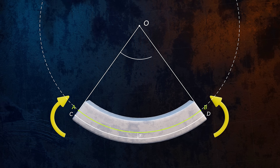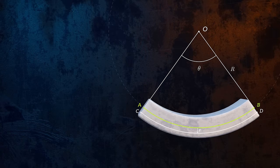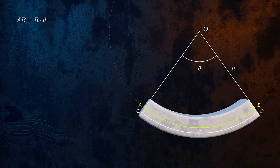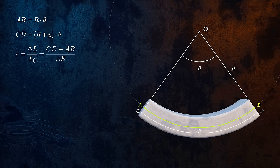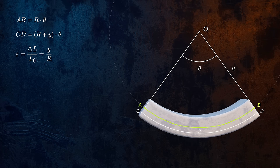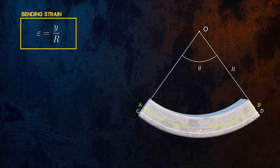If theta is the angle of the arc, and R is the radius of the arc to the neutral axis, we can calculate the length of the arc between A and B, and we can calculate the length of the arc between C and D in the same way. Strain is defined as the change in length divided by the original length, and so we can derive an equation for bending strain at any distance Y from the neutral axis. We define the distance Y as being positive downwards, and so this equation will give us a positive strain for the bottom of the cross section, which is in tension. Sometimes you'll see this equation written with a minus sign, but that's because Y was defined as being positive upwards.